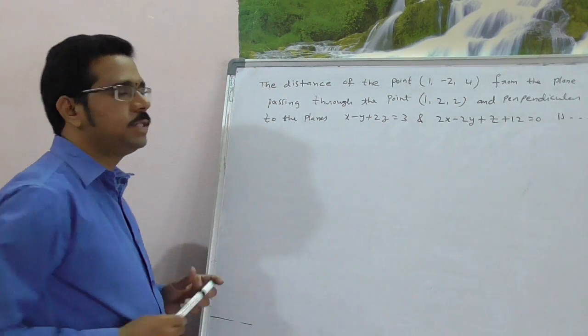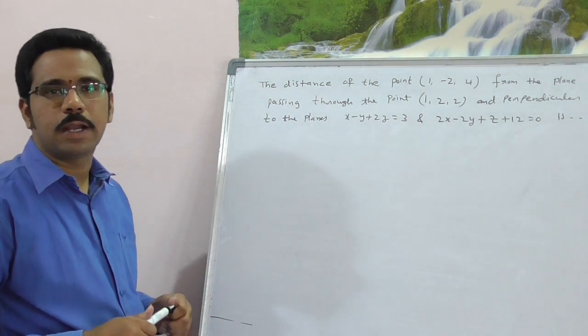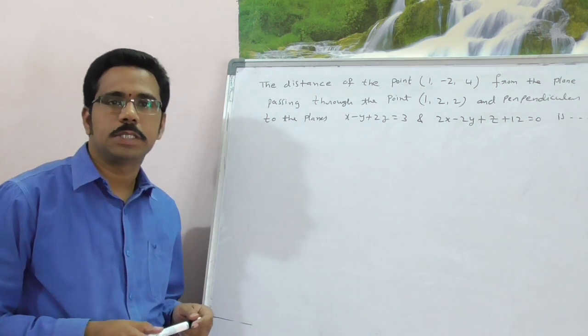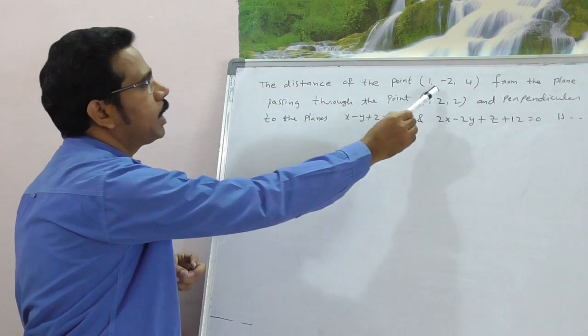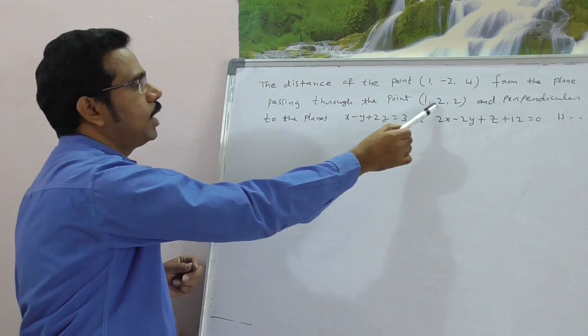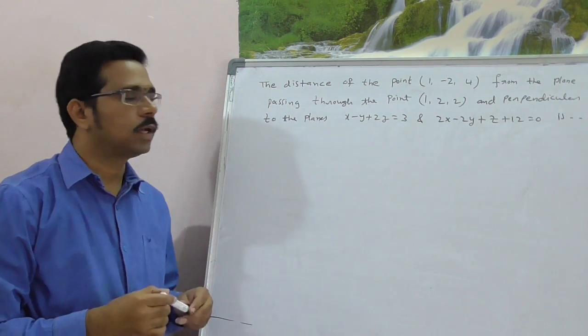Hi, this question from J.E. Main online exam which was conducted on April 9, 2016. The distance of the point (1, -2, 4) from the plane passing through (1, 2, 2) and perpendicular to the given two lines.